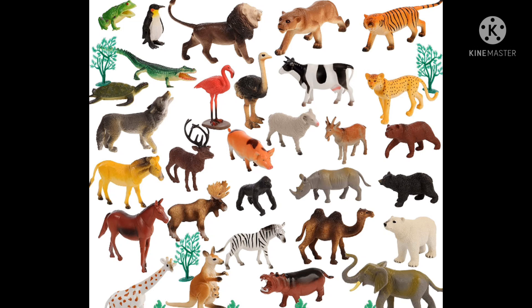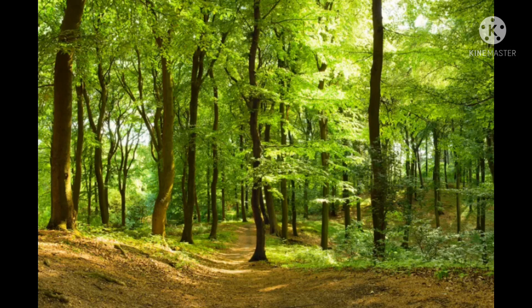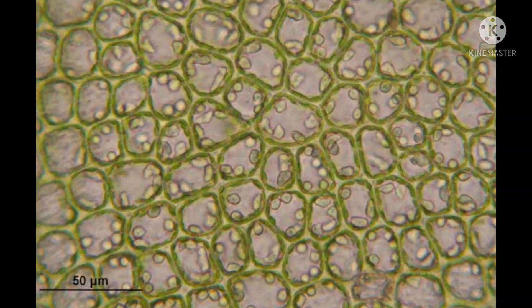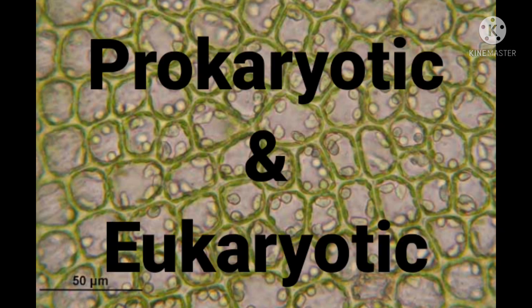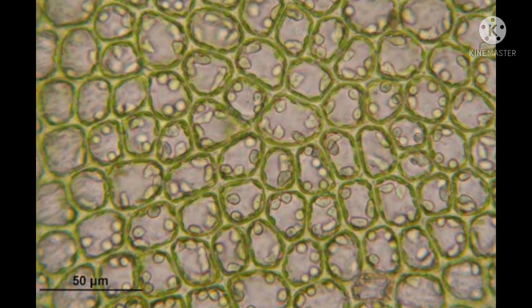All living things are made up of cells, whether plant, animal, or bacteria. If it is a living organism, it's made up of at least one cell. Animals such as mammals, reptiles, and amphibians, and most plants, are made up of millions and millions of cells. There are two types of cells: prokaryotic and eukaryotic.